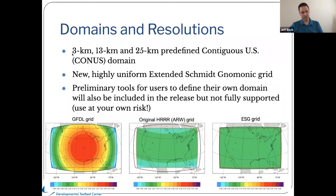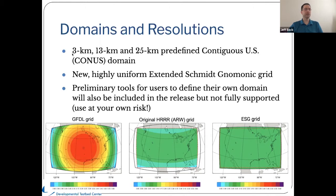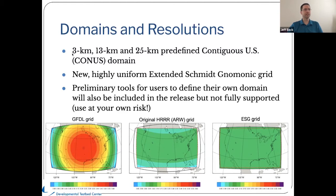Here are the domains and resolutions. In the medium-range weather app first release, you only had the option for a limited number of resolutions. This is somewhat similar in the short-range weather app, although we do have a slight advantage in releasing preliminary tools for users to define their own domain. You will have three predefined domains: three kilometers, 13 km, and 25 km for the CONUS domain. If you wish to run over the Great Lakes or over your city for a small sub-CONUS domain, you can do that. These tools exist, but they're currently used at your own risk — not an officially supported component of the release. You can go ahead and try to create your own domain, even a huge North American domain if you want.